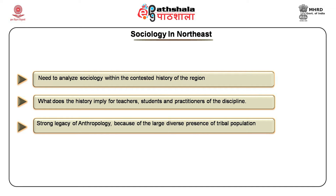Barua argues that the problem that the British scholar-administrator confronted in the Northeast was how to make sense of the relatively egalitarian modes and habits among the people. Given that the colonial notion of India was that it was essentially a hierarchical civilization, they found it difficult to figure out whether people of the Northeast were outside or inside the racial unity of India. It is thus in this contested history of the region that one has to analyze what doing sociology refers to and what it means to the teachers, students and practitioners of the discipline.